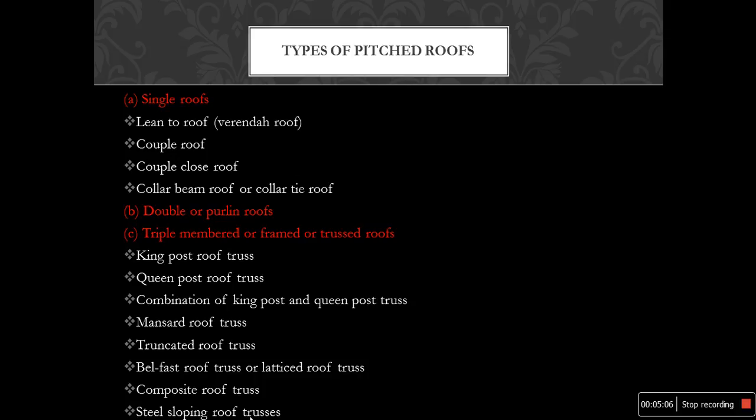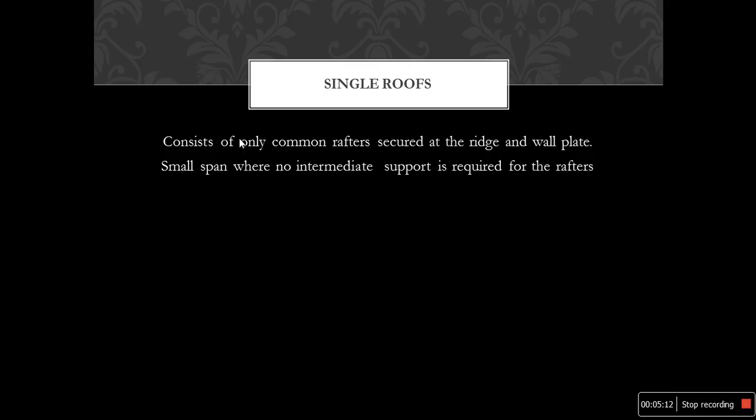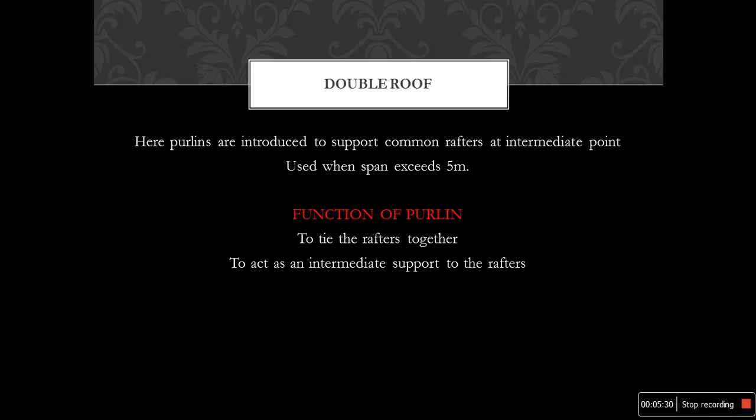Single roof consists of only one common rafter at the ridge and the wall plate. For small spans where no intermediate support is required for the rafters, a single roof is adopted. Double roofs are provided with the help of purlins to support the common rafters at intermediate points.